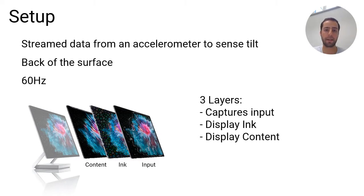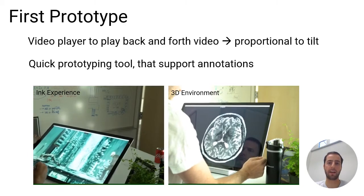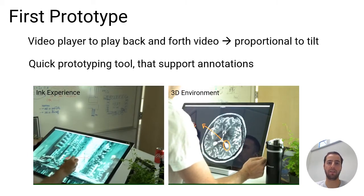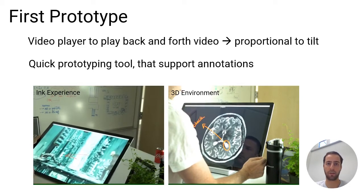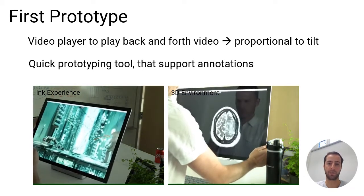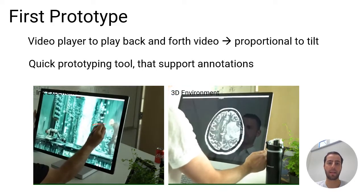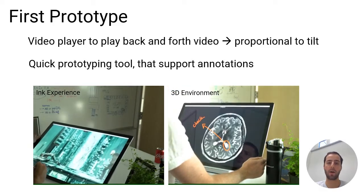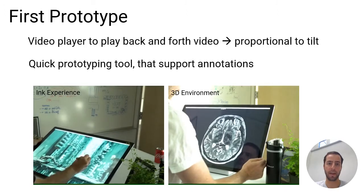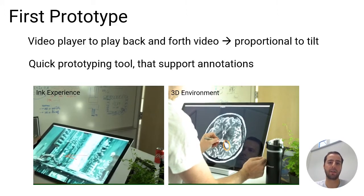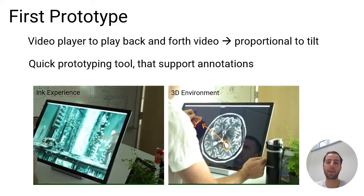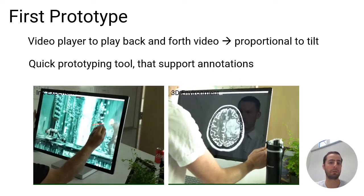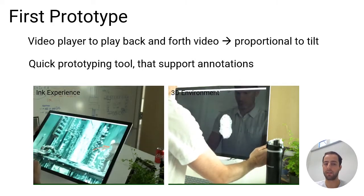Through our app scenarios, we show how a variety of knowledge work scenarios can use sensed display adjustment to drive context-appropriate transitions. We prototyped and partially implemented several user experiences by playing back video files interactively, proportional to tilt. The current angle indicates which frame of the video to display, allowing interactive non-sequential access — forward or backward — as the user adjusts the display. We found this to be a powerful prototyping tool, because any quick screen recording or video mockup could be used to quickly try out ideas.